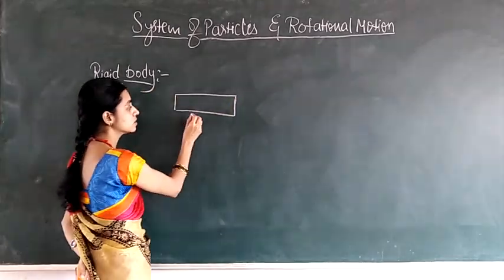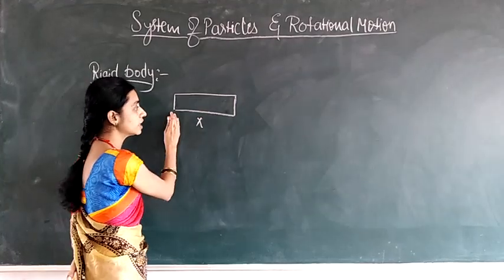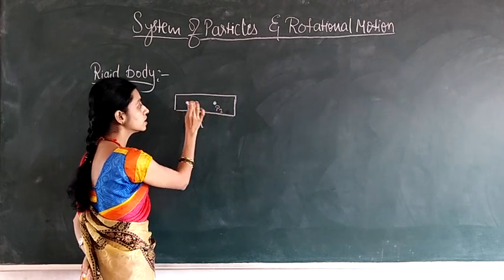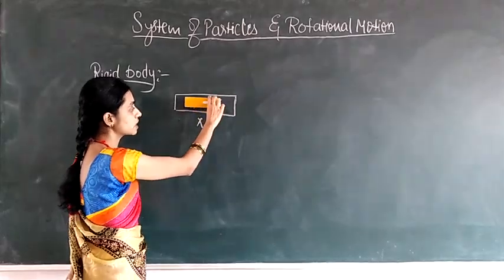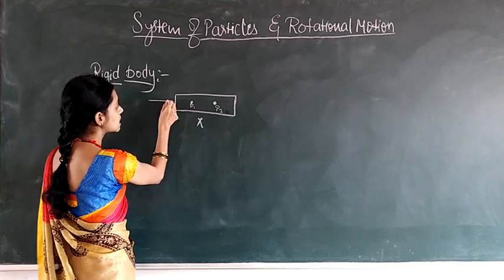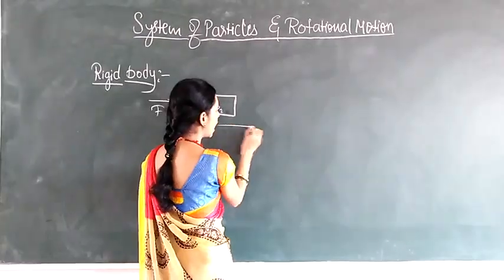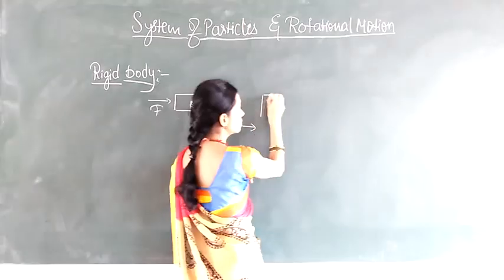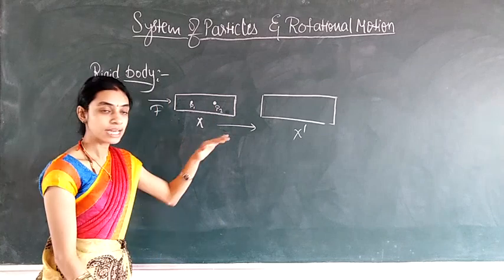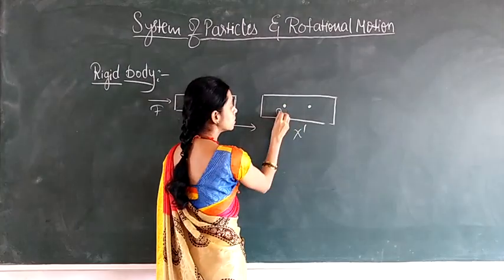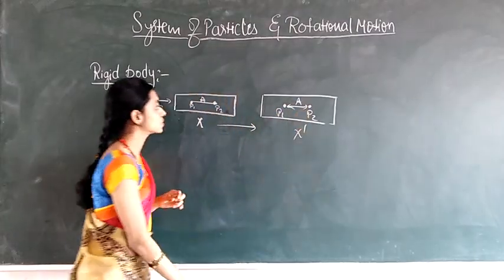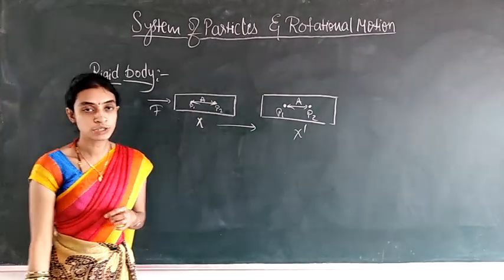Suppose there is an object at position X. Consider two particles P1 and P2 on this object — for example, two points on a duster. Next I will apply a certain force, and the duster displaces from its position X to X dash. In this case the distance between the two particles always remains the same. If this distance is A, this distance will also be equal to A. That is what a rigid body indicates.